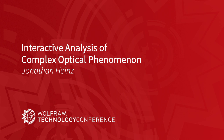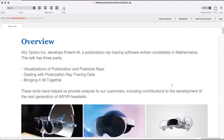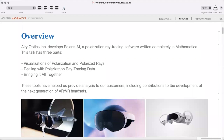Hi everybody, my name is Jonathan Heinz, I'm the lead developer at Arioptics Inc. We specialize in polarization, and specifically we develop Polarism, which is a polarization ray tracing software written completely within Mathematica. It uses all of Mathematica's functions and the paclet system, and does full physically accurate polarization ray tracing for customers in a wide range of applications.